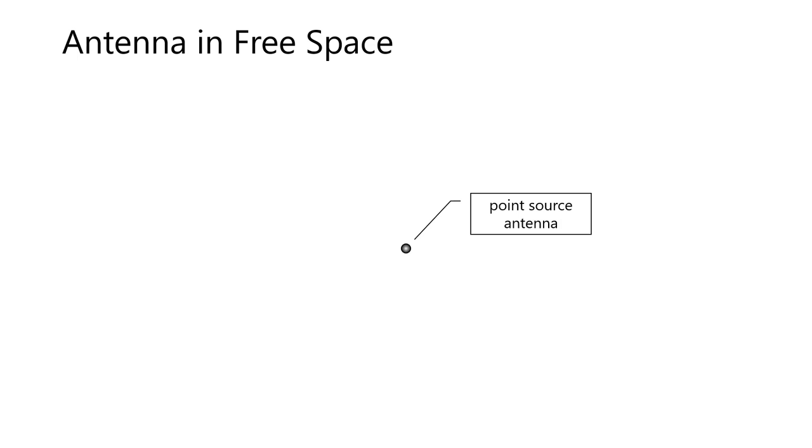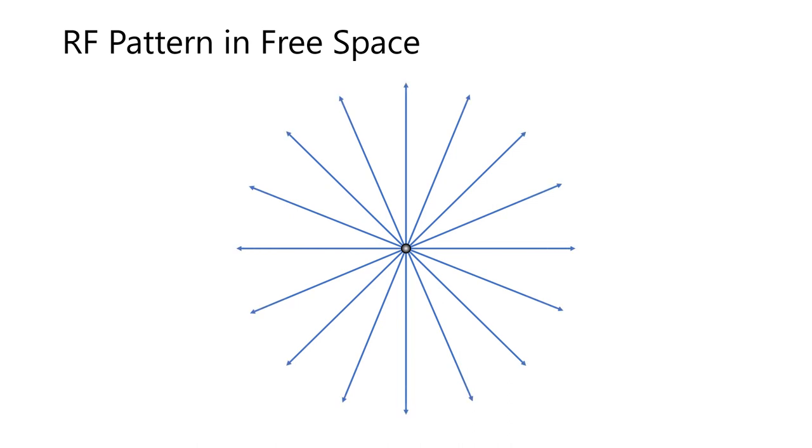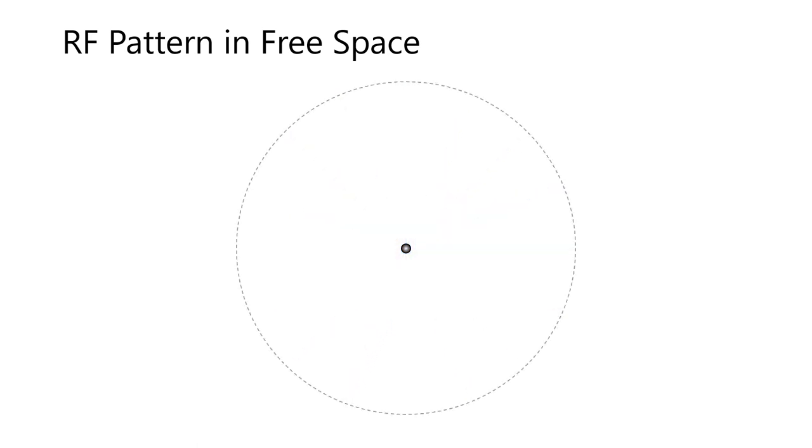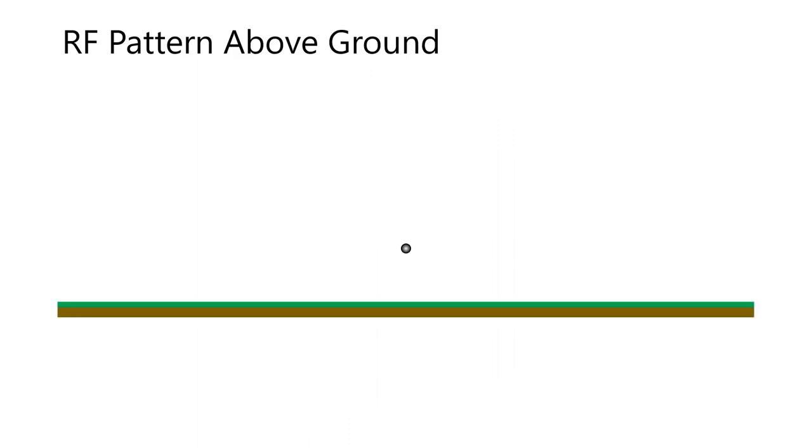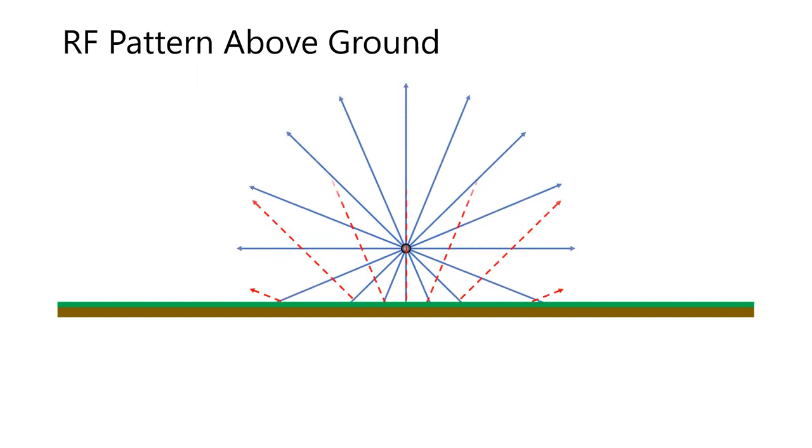Let's begin the discussion with a theoretical point source antenna suspended in free space. Notice the RF energy is spreading evenly in all directions. When an antenna is within a ground plane, the RF energy will reflect from that plane. When this occurs, the reflected energy in red combines to the direct RF energy shown in blue. In this example, the antenna is a quarter wavelength above the ground plane.